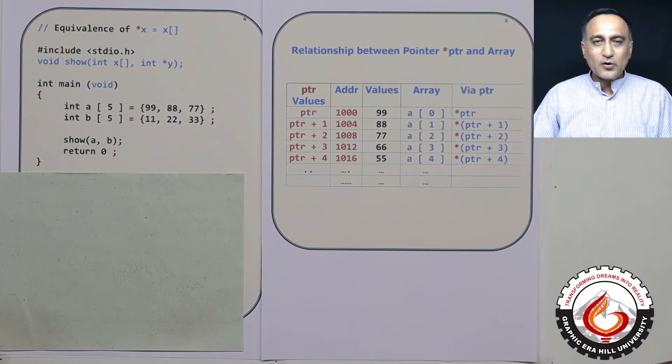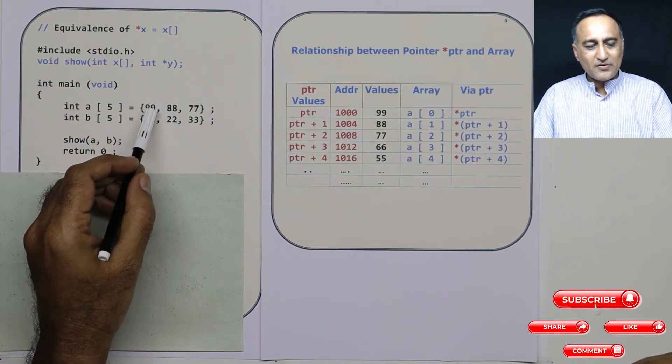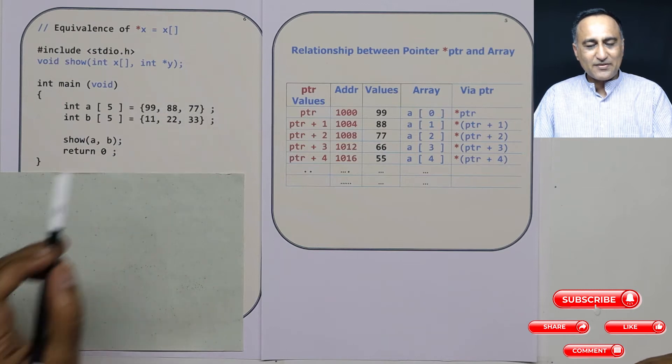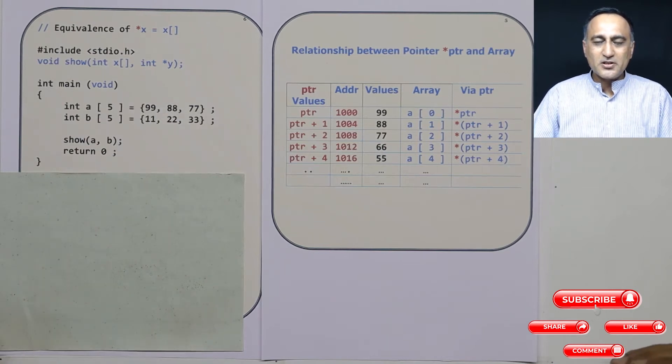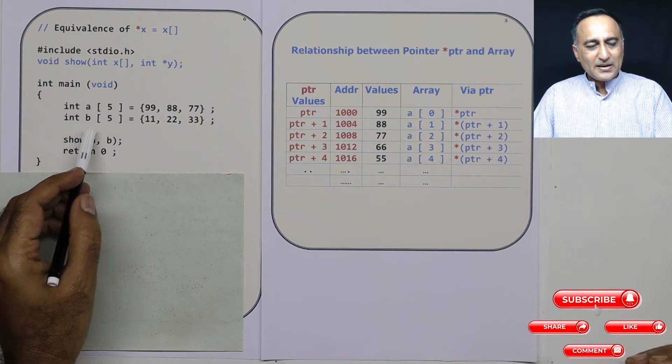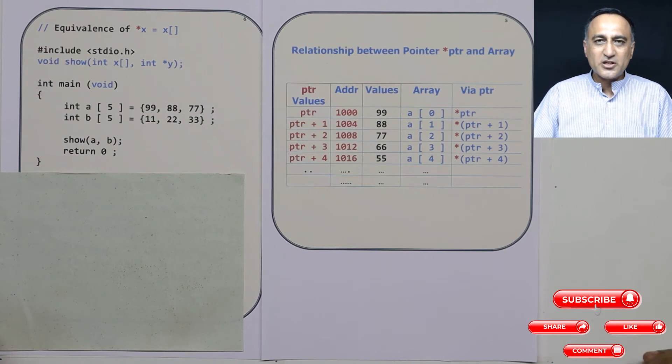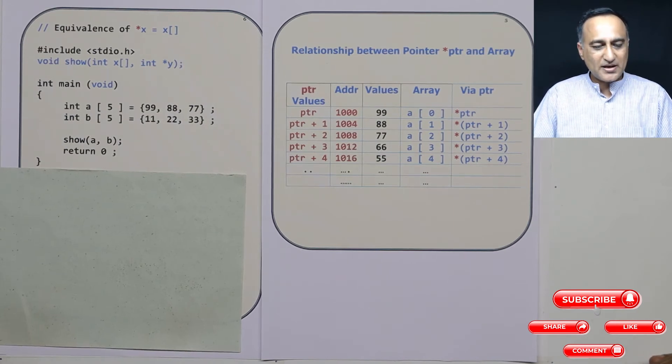Let's first take a look at what we are trying to do in this particular problem. I have declared an array a of 5 numbers but I have given only 3 values: 99, 88 and 77. The rest of the 2 locations are going to be filled with 0 and 0. Int array b of 5 locations with these 3 numbers - the remaining 2 locations are going to be filled with 0s and 0s.